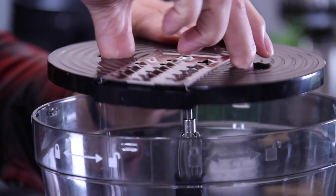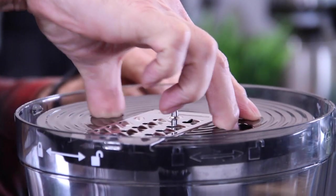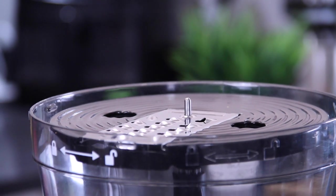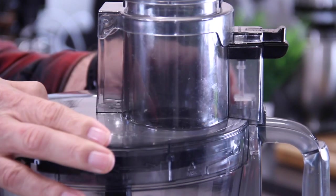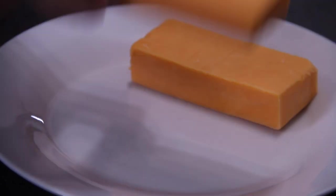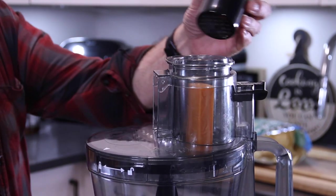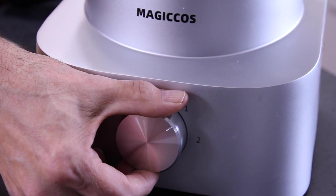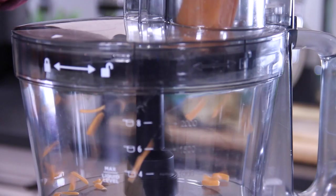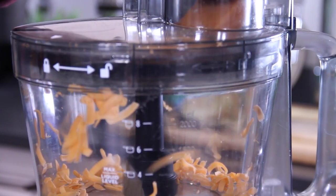Grab up our coarse shredding blade, which we talked about earlier, and place it into the food processor. Slip our top on. Grab up some yummy old cheddar cheese. Into the chute. Plunge her in and press it down. And in this case I'm going to use speed one.